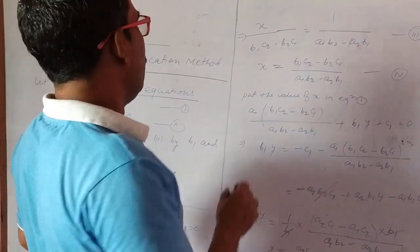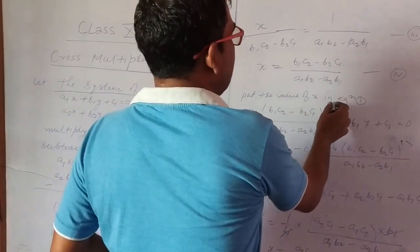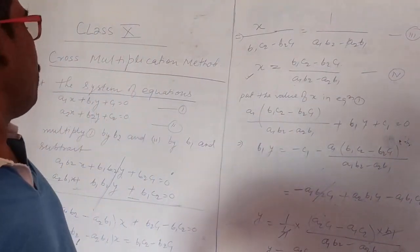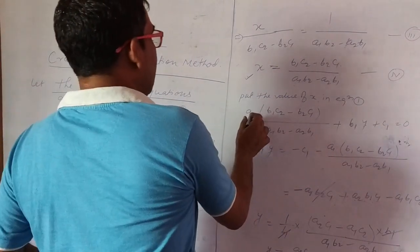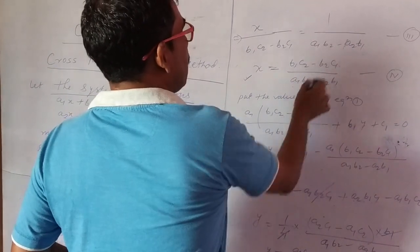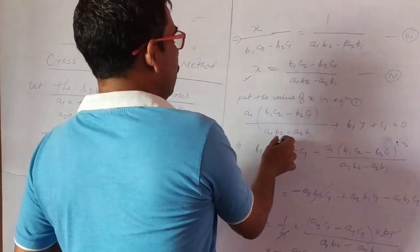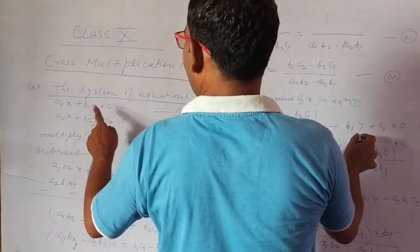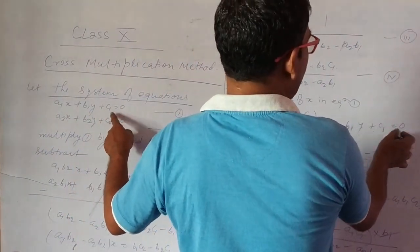Again, we put the value of x in equation number 1 by substitution. Then what happens? This a1, in place of x, b1c2 minus b2c1 by a1b2 minus a2b1, plus b1y plus c1 equal to 0.